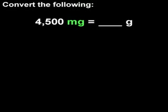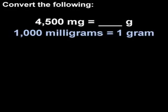Mg is the abbreviation for milligrams, and g is the abbreviation for grams. To convert 4,500 mg into grams, we first find the conversion factor for milligrams in grams, which is 1,000 mg is equal to 1 gram.